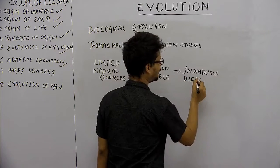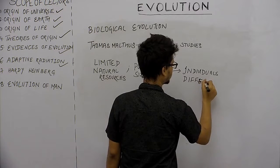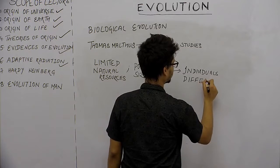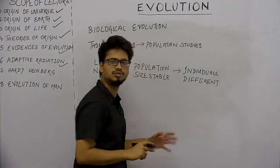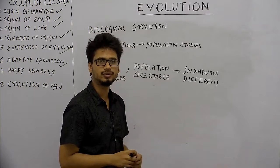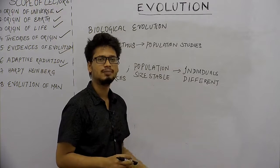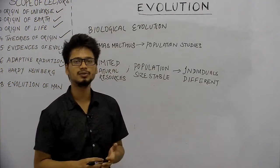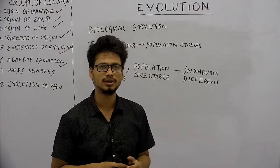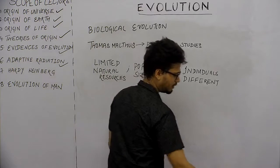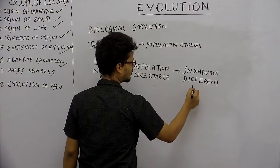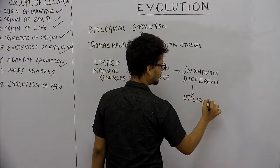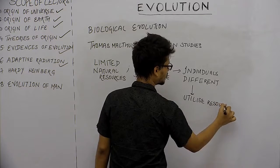But minor fluctuations come with seasonal variations. Individuals are different from each other. Why are we studying population studies? Because Darwin was very much influenced by Malthus's studies.